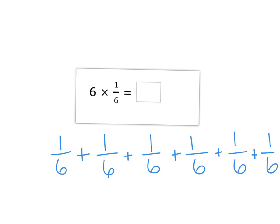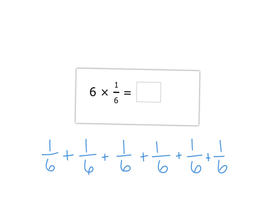When we do addition we know the denominator stays the same. And then we just add the numerator, and that would be equivalent to 1 whole.